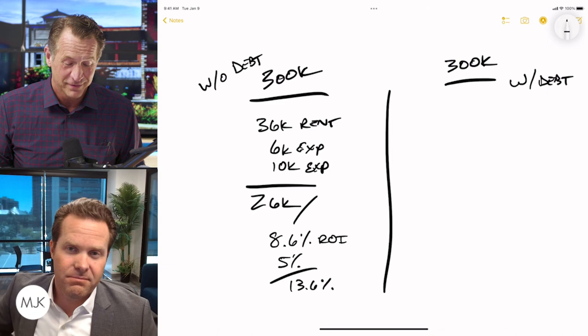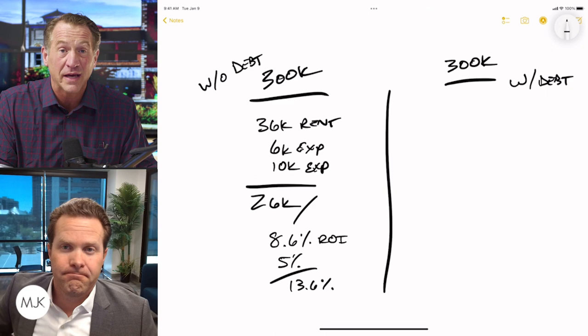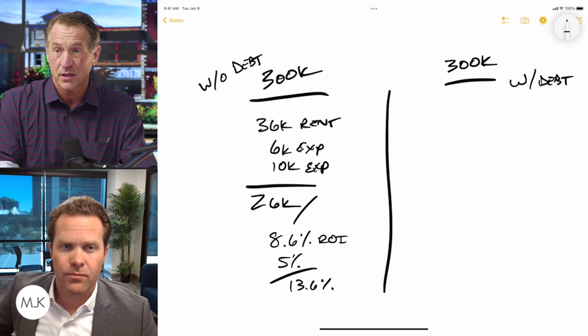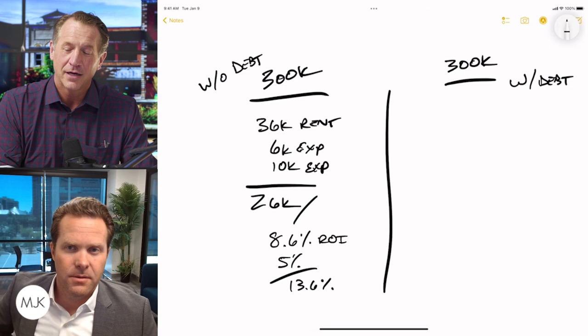So I have now got a 13.6% return. Now this is why I love buying real estate in an IRA. Cash flow and appreciation. There's no UDFI down the road. I've got selling costs. I get it. But that's pretty good. That's not chump change.